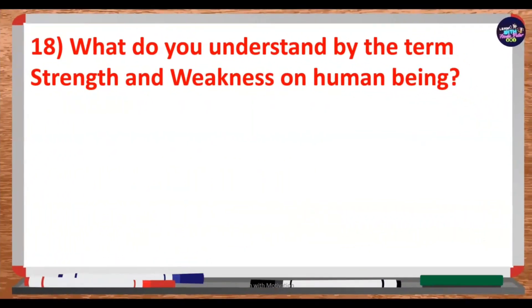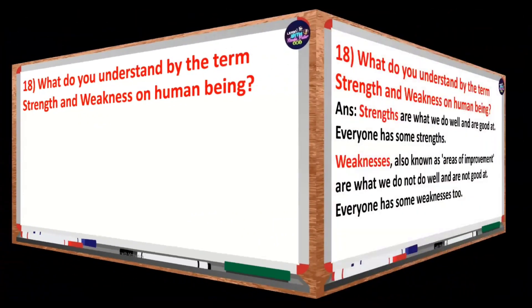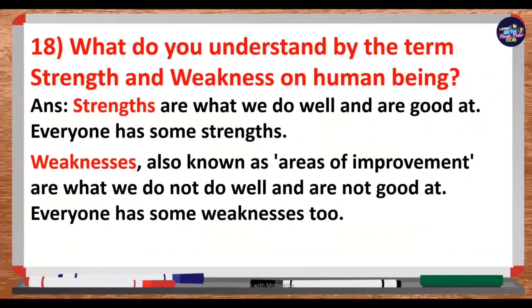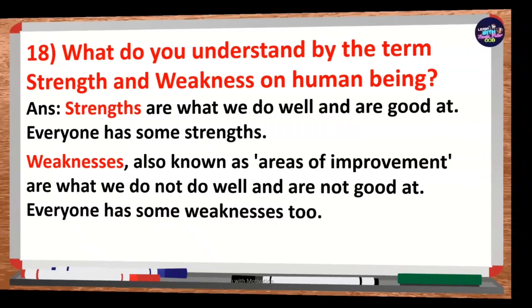What do you understand by the terms strength and weakness in human beings? Strengths are what we do well and are good at — everyone has some strengths. Weaknesses, also known as areas of improvement, are what we do not do well and are not good at. Everyone has some weaknesses too.